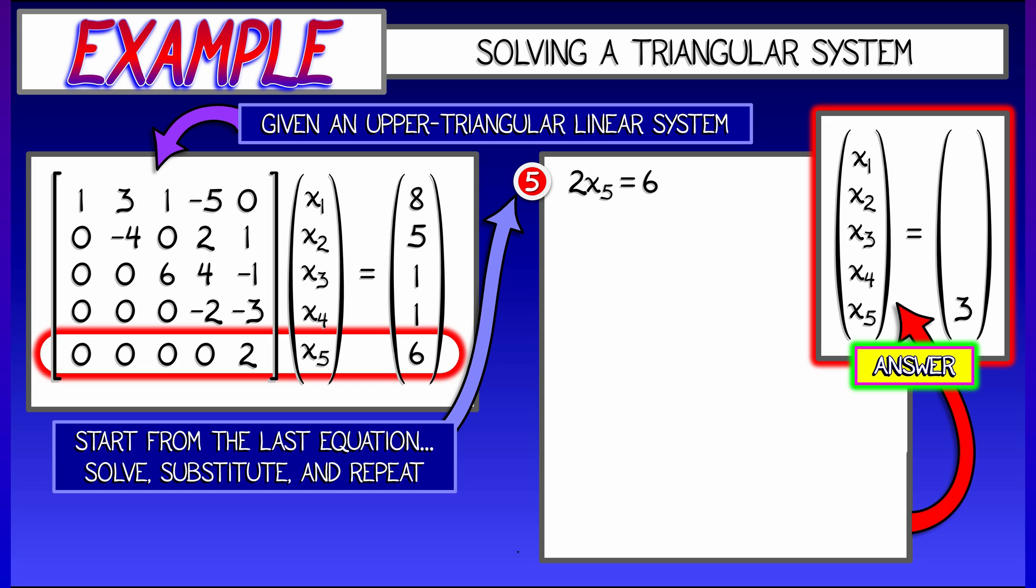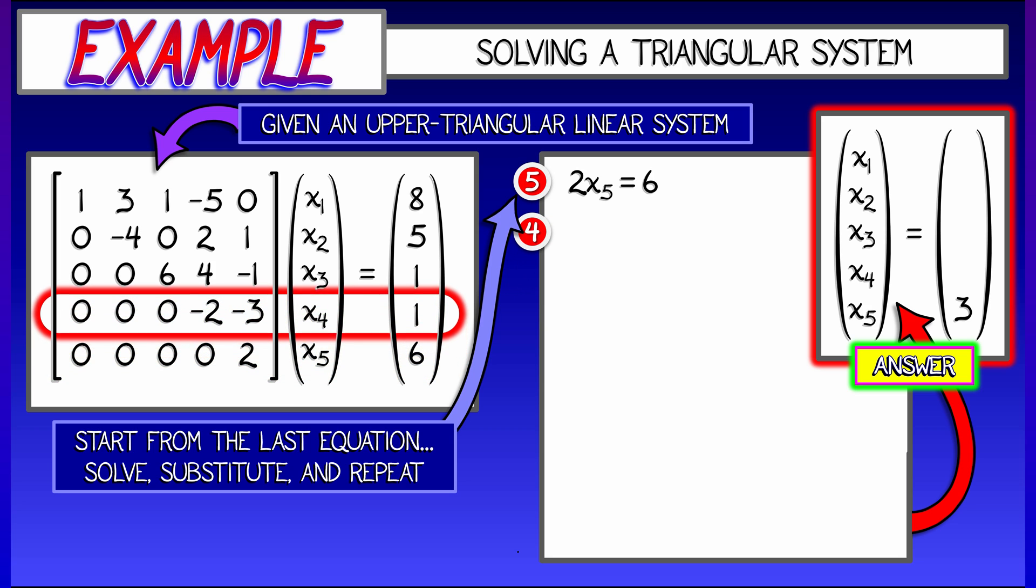But we have all those other equations to deal with, all the other rows. Let's go up one and look at the next simplest row. In this case, we read it off. It's negative 2X4 minus 3X5 equals 1.